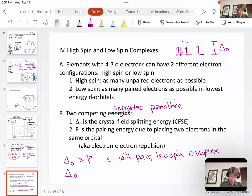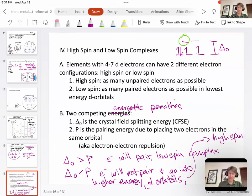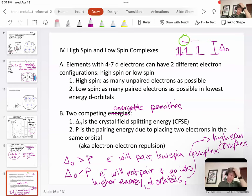And vice versa, if it's less than the pairing energy, that crystal field splitting energy delta zero, then electrons will not pair and go into the higher energy. And so that would be akin to the fourth electron being placed higher up and go into higher energy d orbitals. And that is a higher spin complex.